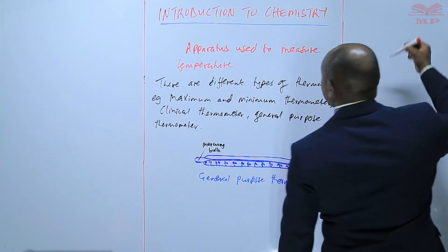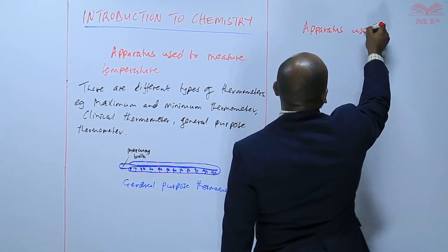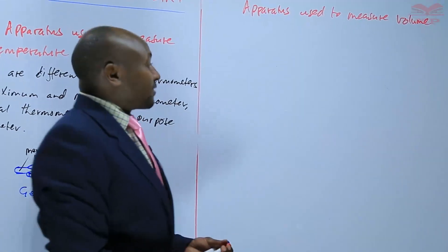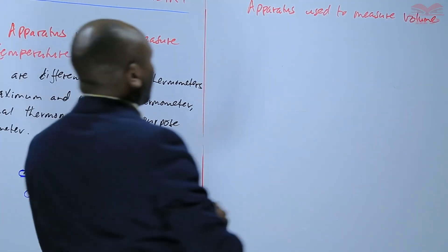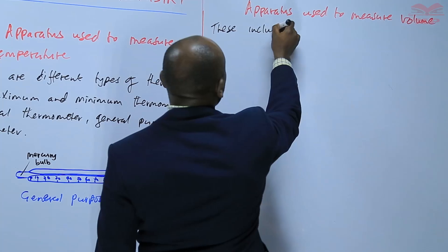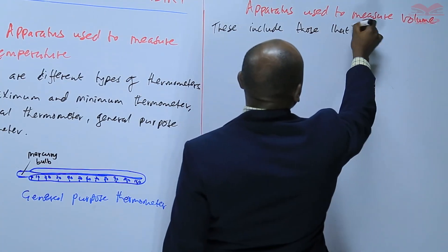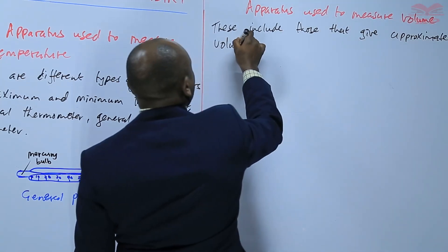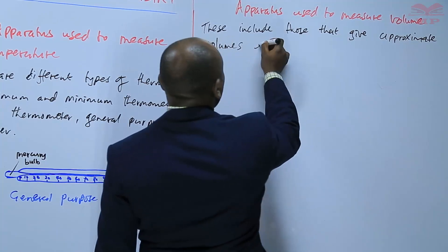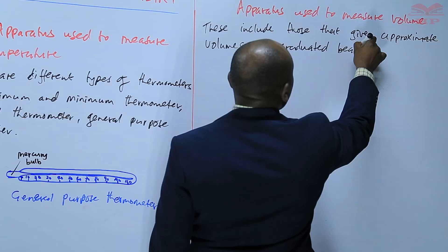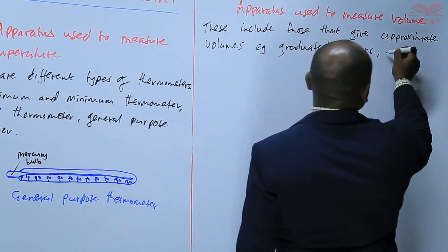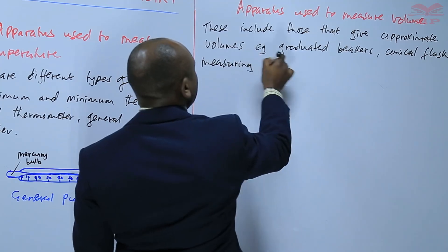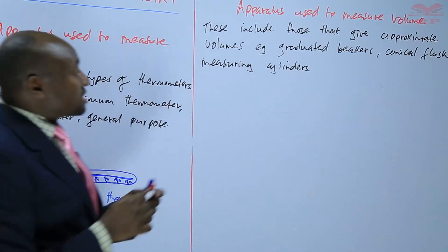Then we can go to the apparatus used to measure volume. And on this, we have several apparatus. And we can say that these include those that give approximate volumes. These ones are for approximating, e.g. graduated beakers, we have conical flasks, we have measuring cylinders. So these ones can be used to measure approximate volumes.